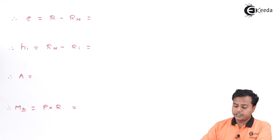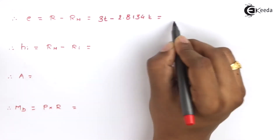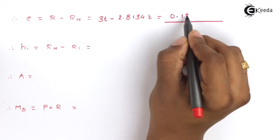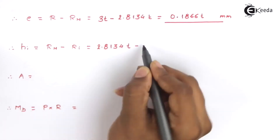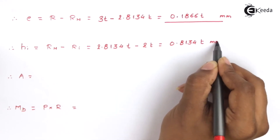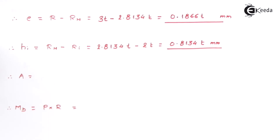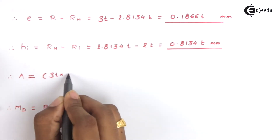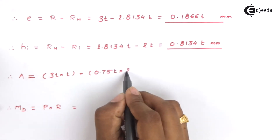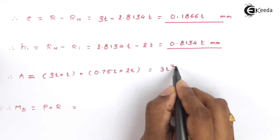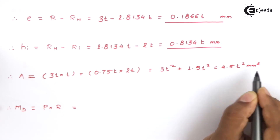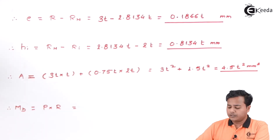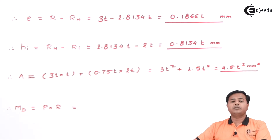Moving ahead with other parameters, the eccentricity e and the value of h can be found from the previous results. The area of cross section is the web area plus the flange area. These are the important parameters we have found out, and now let us move ahead to find the bending stresses and direct stresses and equate them to the main equation.